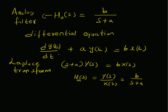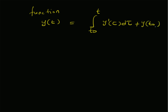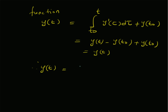Now we can write y(t) as an integral: y(t) = ∫[t₀ to t] y′(τ) dτ + y(t₀). This is simply y(t) − y(t₀) + y(t₀), so y(t) equals the sum of the integral from t₀ to t of y′(τ) dτ plus y(t₀). Since y′(t) is the derivative of y(t), we can approximate this integral using the trapezoidal formula.